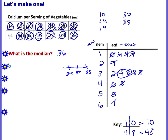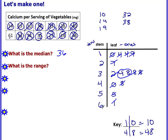Our next question: what is the range? The range is high minus low. The highest number in our stem and leaf plot — the highest stem is a six, the largest leaf is a one — so that makes sixty-one. Minus the lowest: one zero, which is ten. Sixty-one minus ten is fifty-one. So the range is fifty-one.